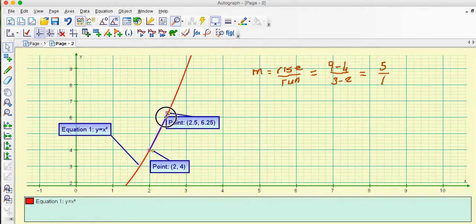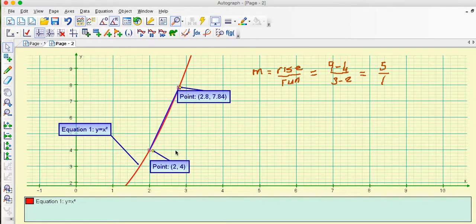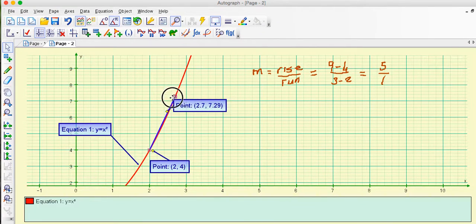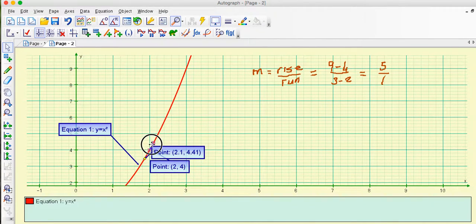Now what's happening is as we get closer and closer the run again less than 1 so it becomes 2.8 take away 2 and the rise becomes this number here which is that take away 4 and the idea is as I move closer and closer and closer down towards there I've got the exact gradient.